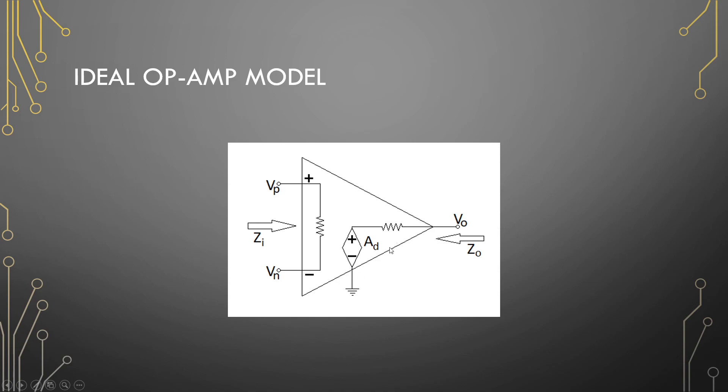The dependent voltage source is our voltage gain. Z-in is our input impedance and Z-out is our output impedance for our model. For ideal op-amp, the output impedance should be equal to zero.